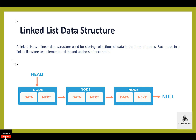Hello everyone. In this video we'll discuss about linked list data structure. A linked list is a linear data structure used for storing collection of data in the form of nodes. Each node in a linked list stores two elements: the first element is the data and second element is the address of next node. The linked list always starts with the head, which denotes the starting point or the memory location of the first node. The linked list ends with the last node pointing to the null value.